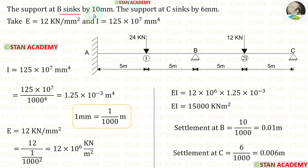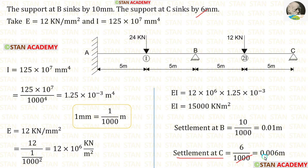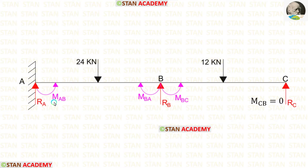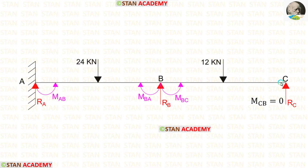The settlement at B is given as 10 mm. Dividing by 1000, we get 0.01 m. Similarly, the settlement at C is 6 mm, which converts to 0.006 m. In this beam, we need to find three moments: MAB, MBA, and MBC, and three reactions: RA, RB, and RC. Since point C is a simply supported end, there will be no moment there, so MCB = 0.